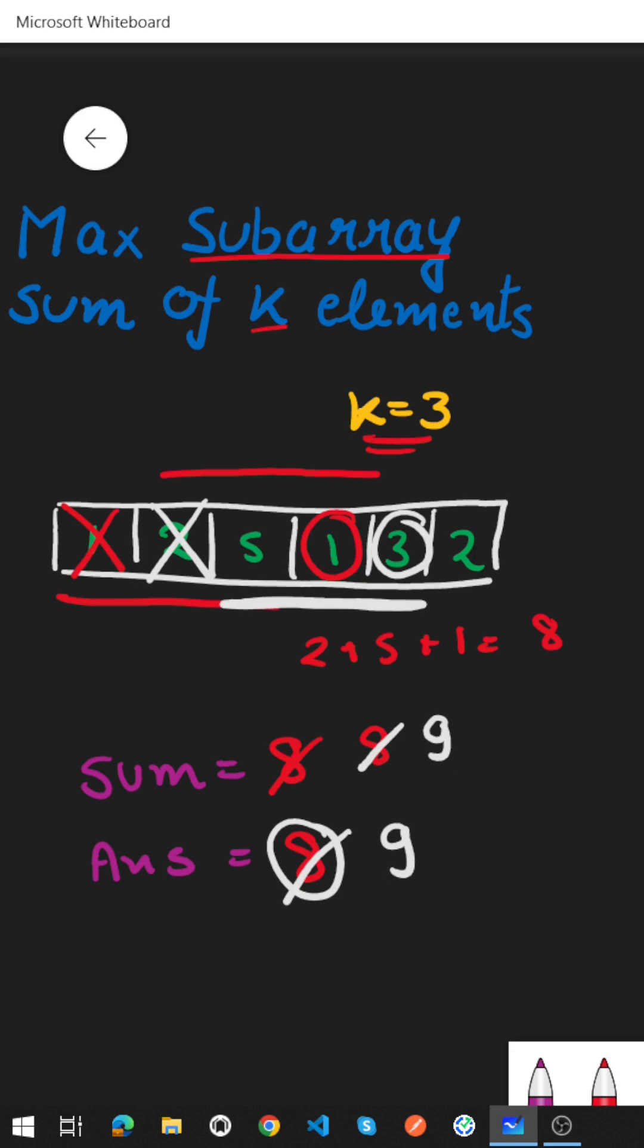Again we will move one step ahead with our window. So to move one step ahead we will remove this last element that is 5 and we will include this element 2 to our window. Now our new window would look something like this which will consist of elements 1, 3 and 2.